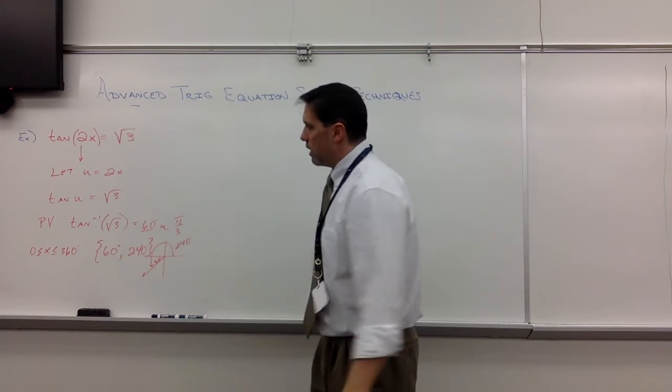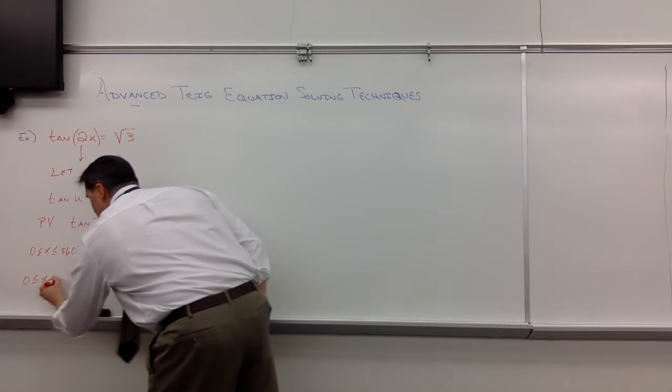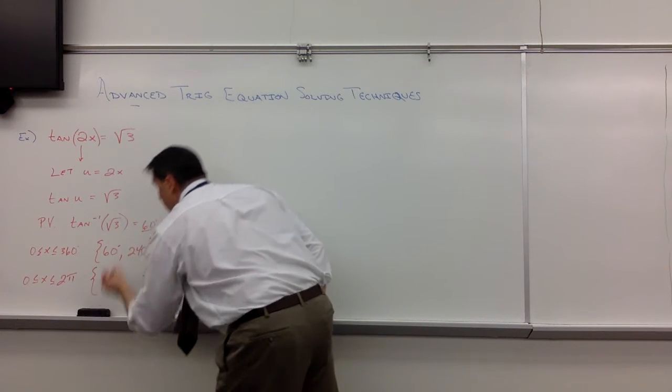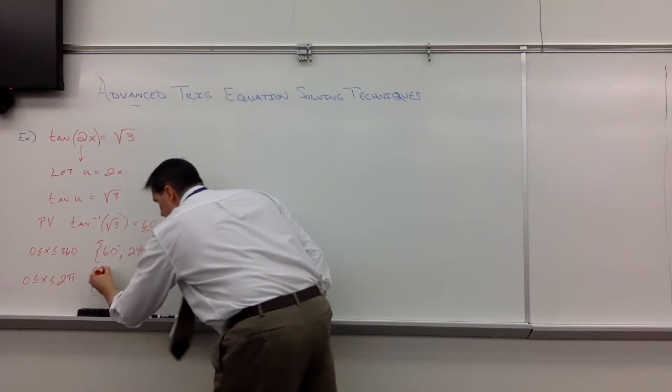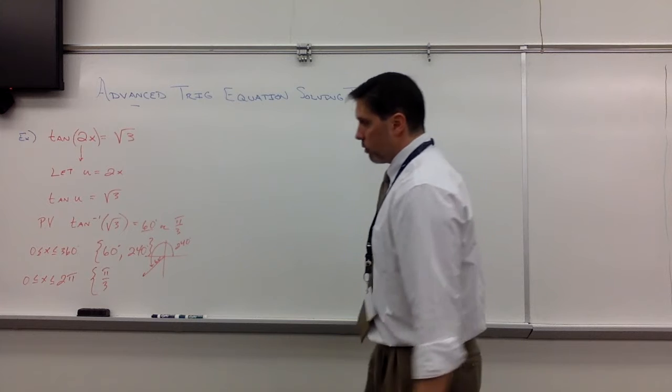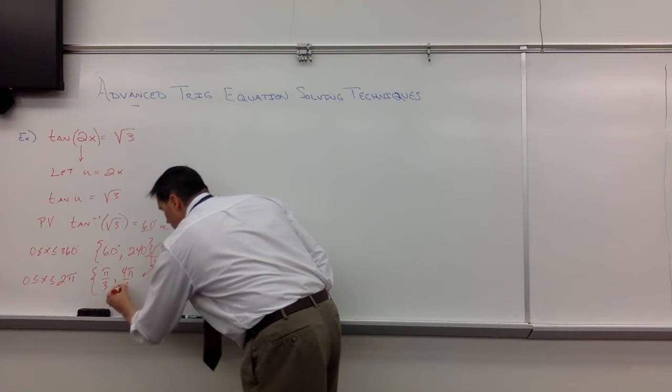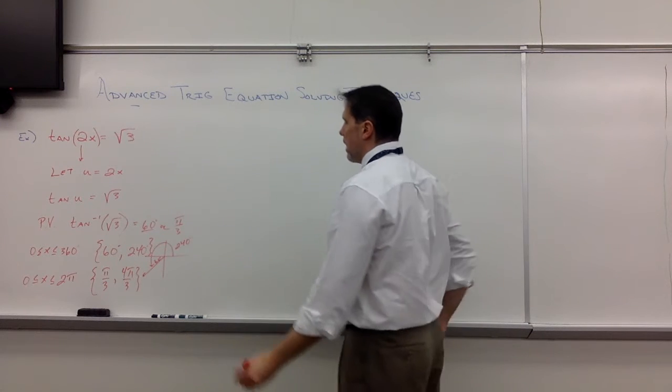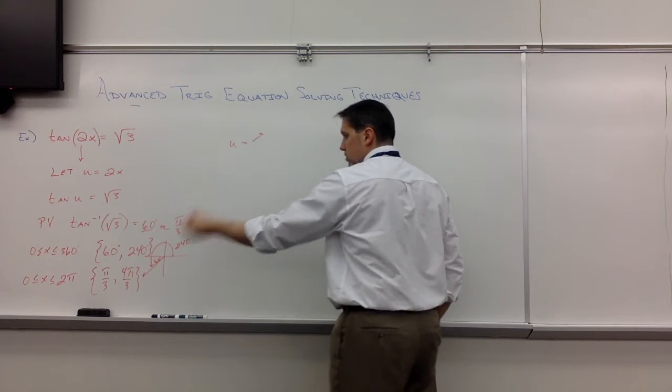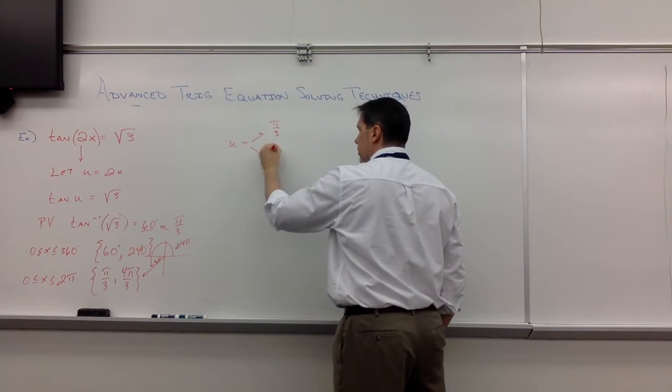Ultimately, let's go to radians here. So 0 less than or equal to x, less than or equal to 2π. 60 degrees, what we've already said, is π thirds. How many 60 degree angles is 240? We need 4π thirds. Alright, so what we did last time is we said, okay, what does u equal? u equals π thirds or 4π thirds.